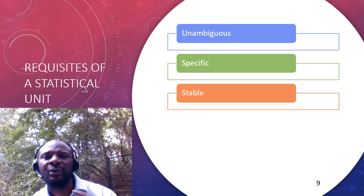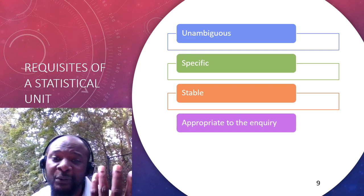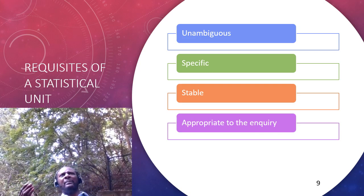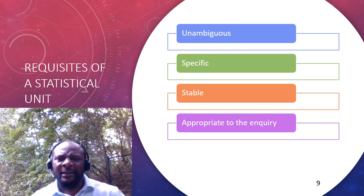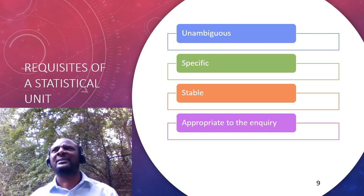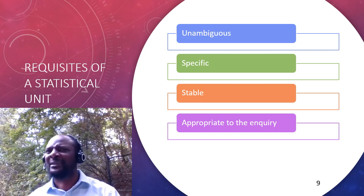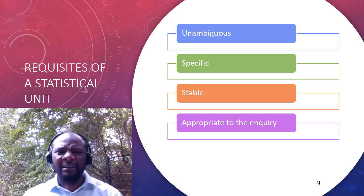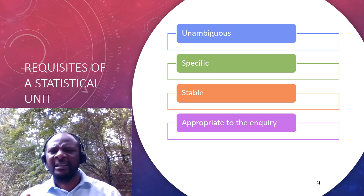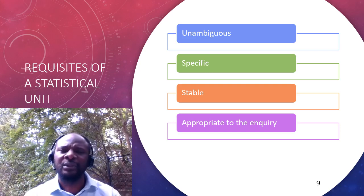The fourth requisite is that the statistical unit must be appropriate to the kind of inquiry. You don't want to inquire about the number of hours medical students sleep and then go and start measuring their heights — what does that help us? Whatever statistical unit you use must be appropriate. If you want to find out how sleep affects learning and pass rates, you should be measuring how many minutes they read every day, what time of day they read, and so on.